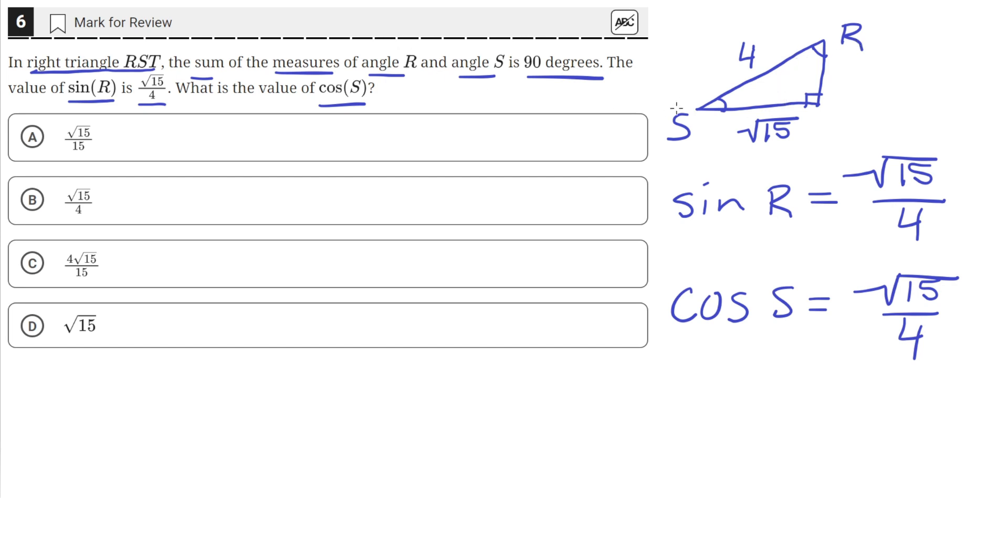So you'll see that for complementary angles, meaning angles that add up to 90 degrees, the sine of one angle is equal to the cosine of the other angle. So the answer for what is the value of cosine of S is just square root 15 over 4, which is answer choice B.